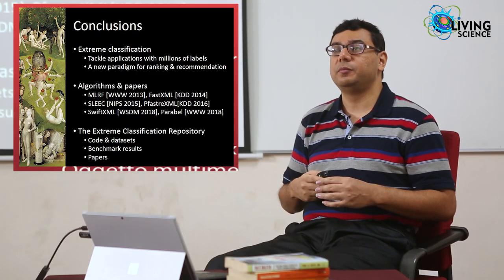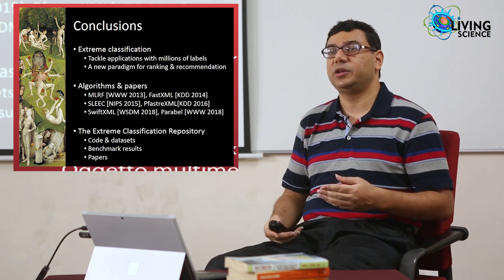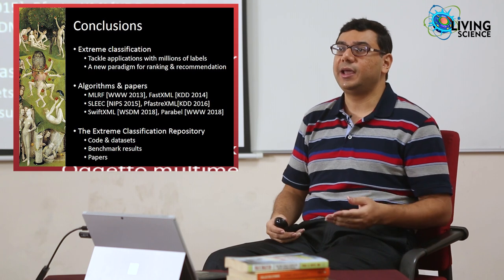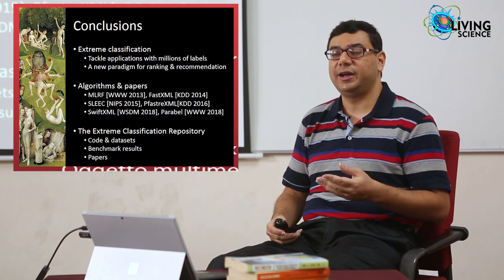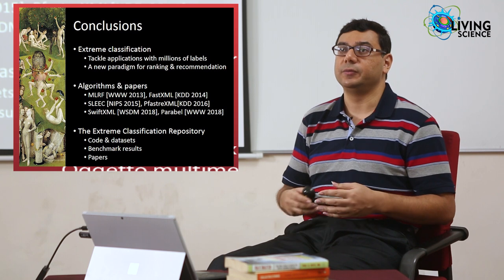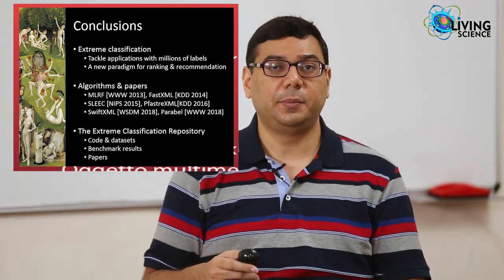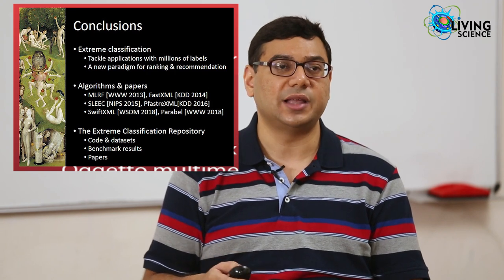There are many other applications — tagging on Wikipedia, person identification on Facebook, language modeling, etc. — but let me conclude the first part of my talk by reiterating that extreme classification is a new research area in machine learning which not only helps us tackle web-scale classification problems but has also opened a new paradigm for critical applications such as ranking and recommendation. Over the last five years we've developed many algorithms; you can find papers, code, and datasets on my web page and the extreme classification repository.